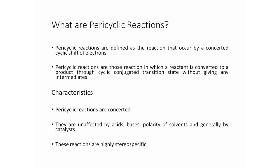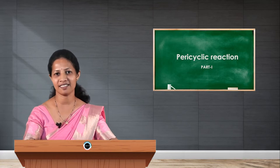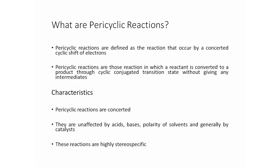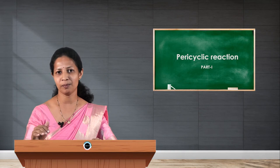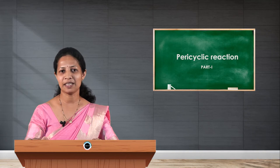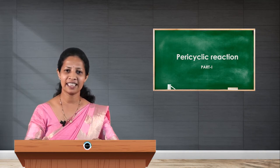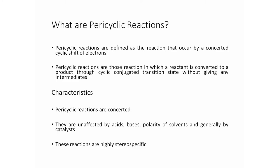Pericyclic reactions are concerted single-step reactions involving cyclic shift of pi and sigma electrons. The key characteristic is that they are concerted reactions, meaning reactant bonds are broken and product bonds are formed simultaneously. Therefore there are no intermediates, and there is a cyclic transition state involving the conversion of reactant to product.